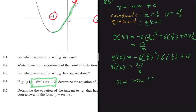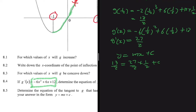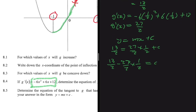Now substituting into y = mx + c: 13/2 = (27/2)(1/2) + c. Solving for c: c = 13/2 - 27/4 = -1/4. Therefore the equation of the tangent with maximum gradient is y = (27/2)x - 1/4.